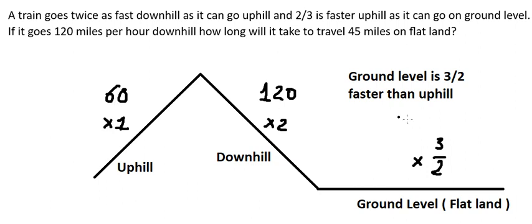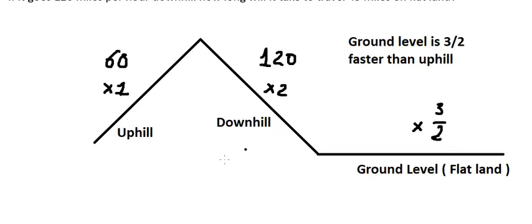Now about this one compared to ground level, this one is faster than uphill in here. So we have 60 multiplied by 3 over 2, and that is about 90 miles per hour.